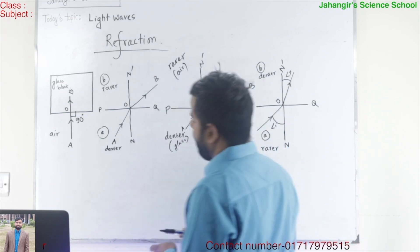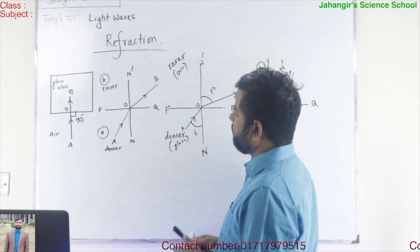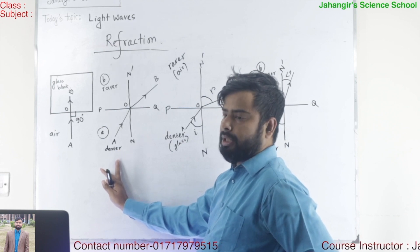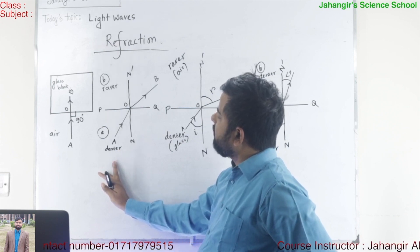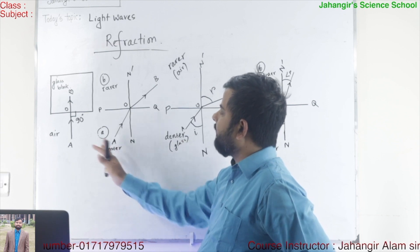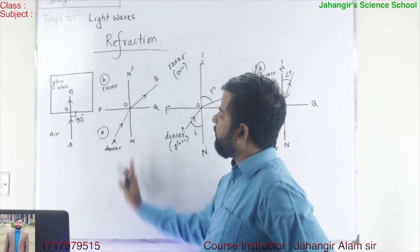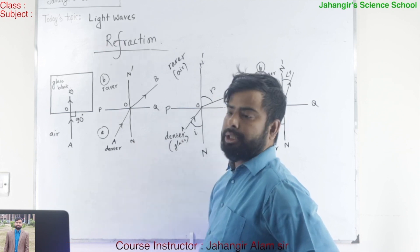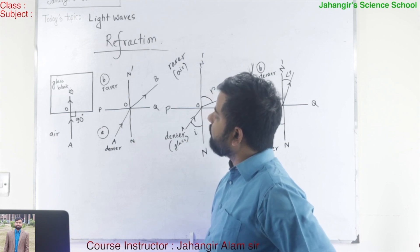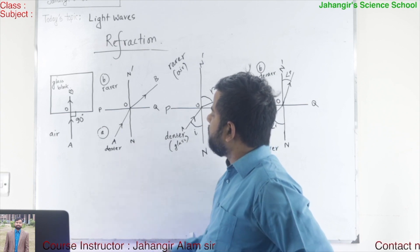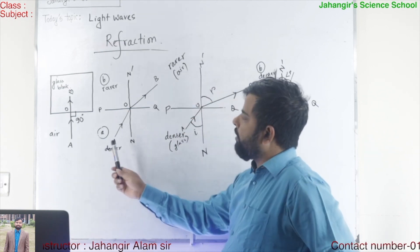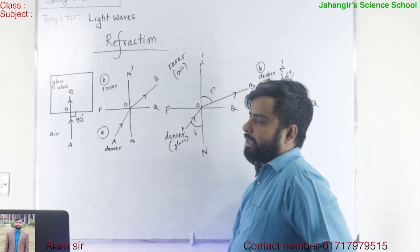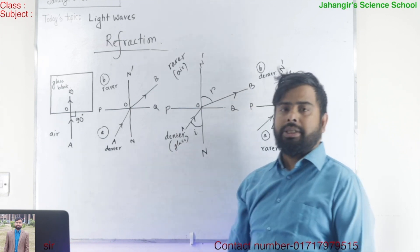But when a light ray incidences from one transparent medium to another transparent medium obliquely — that is, at any angle except 90 degrees with the normal or perpendicular — where the normal is the perpendicular drawn at the point of incidence with the separation line of the two media, then it changes its direction of path. This phenomenon is known as refraction of light.